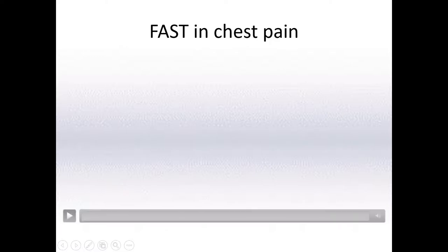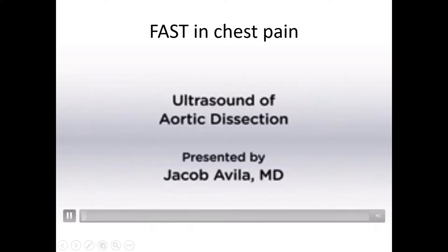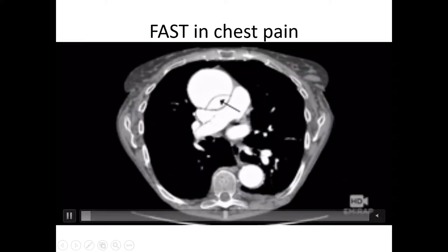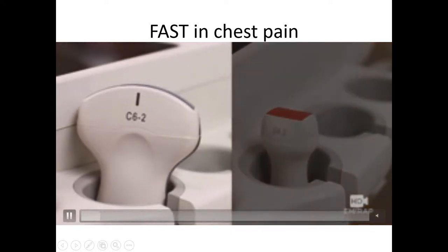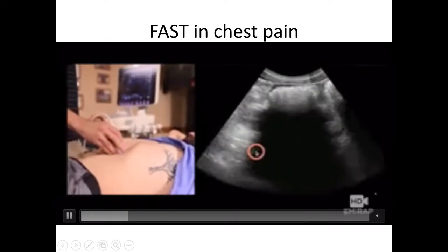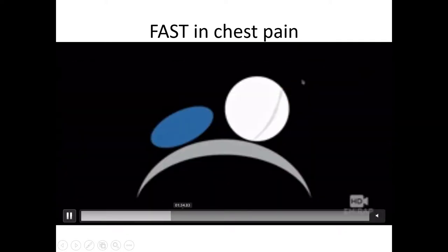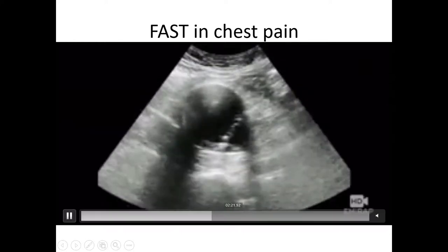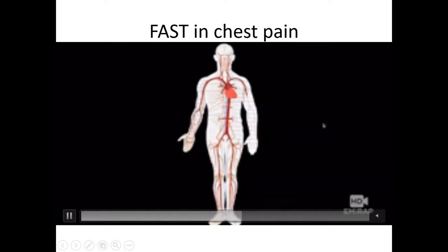In the ER, we also have FAST ultrasound, used for any patient presenting with trauma or chest pain. Using a small probe in the epigastrium, you can see the liver and the aorta. In this image, you can see a moving flap — this moving flap is very important to identify if you suspect aortic dissection.